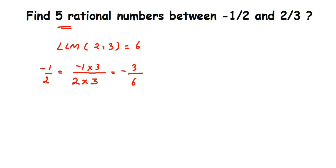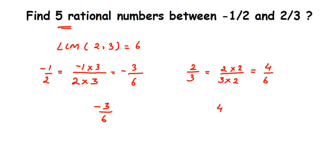For the second number, 2 by 3, we multiply numerator and denominator by 2 to get 6 in the denominator. That gives us 4 by 6. Now we have minus 3 by 6 and 4 by 6 with the same denominators. We need to find only 5 rational numbers, and between minus 3 and 4 we have numbers like minus 2, minus 1, 0, 1, 2, 3. We pick any 5 and write them with denominator 6.